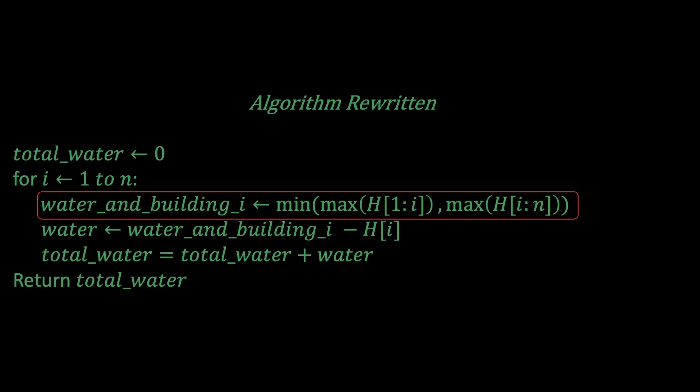Now I'm going to rewrite the algorithm we wrote earlier in terms of this notation. I will skip lmax and rmax all together and I'm just going to write the water_and_building_i expression in a very elegant form using this notation, which is the minimum of the two maximums. The first maximum is the maximum of H[1:i] and the second maximum is the maximum of H[i:n]. Simple enough. This is just rewriting the old algorithm.